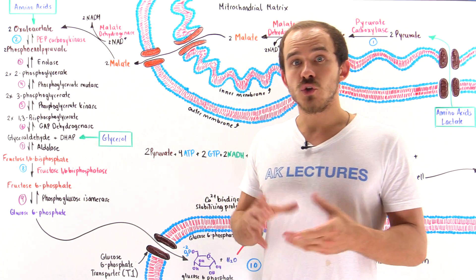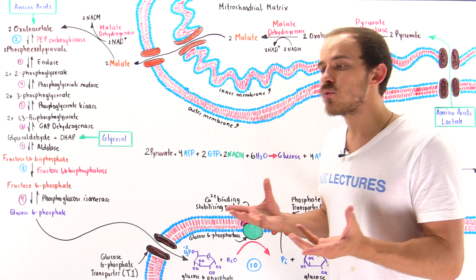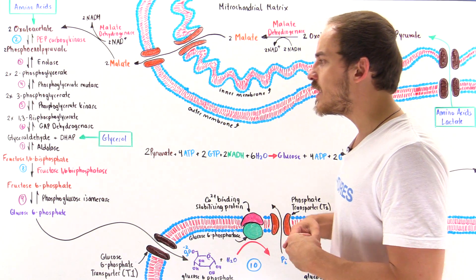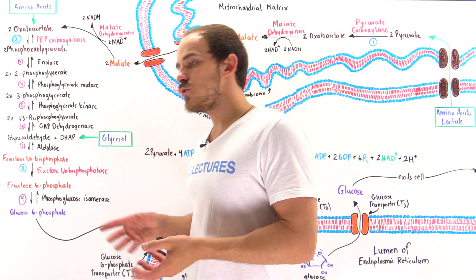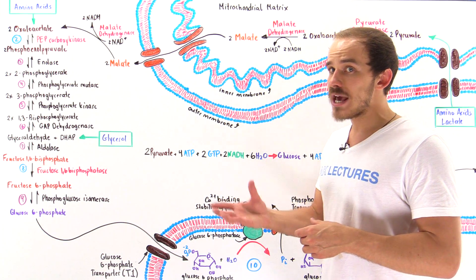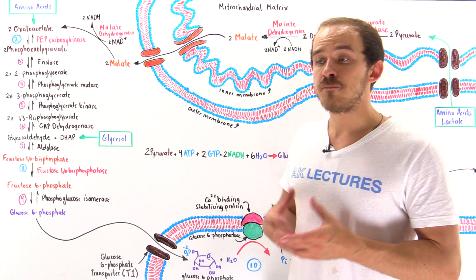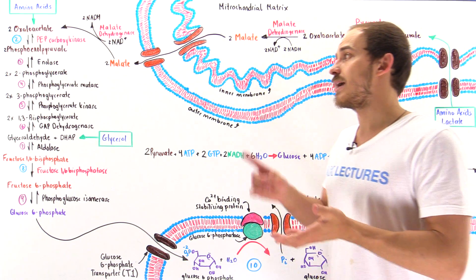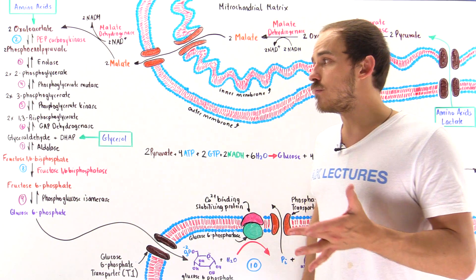Now that we discussed the details of gluconeogenesis, let's summarize our results into a single lecture. Let's begin by defining what gluconeogenesis actually is. Gluconeogenesis is the process by which the cells of our body can actually generate glucose molecules, beginning with non-carbohydrate precursor molecules, such as pyruvate, as well as lactate molecules, amino acids, and glycerol molecules.